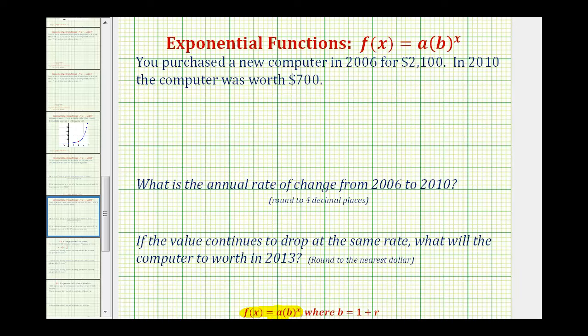a is equal to the initial value, or the function value when x equals zero, and x is the exponent.